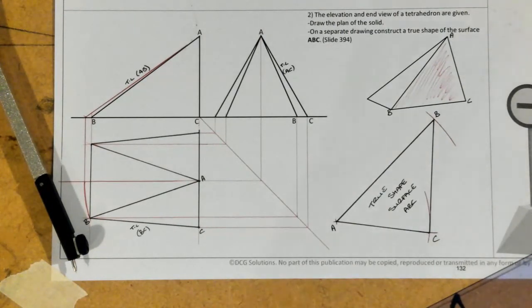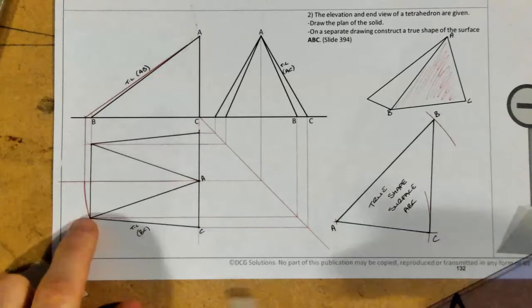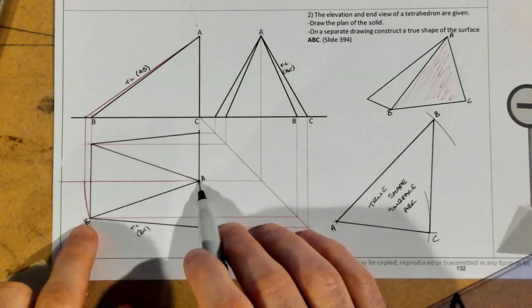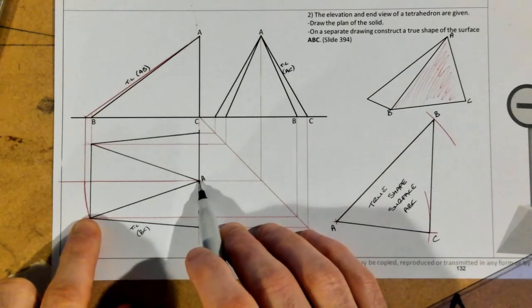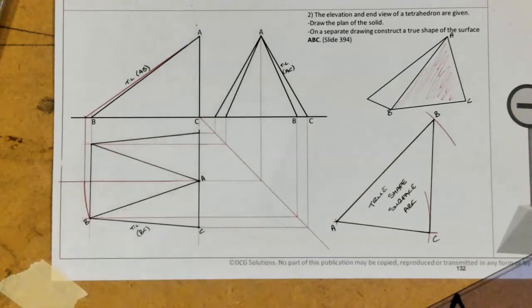And all that was actually really in that question, the hardest part was literally just recognizing that the line A, B, if we took it as the generator of a cone and rotated it up to get the true length. Question done.